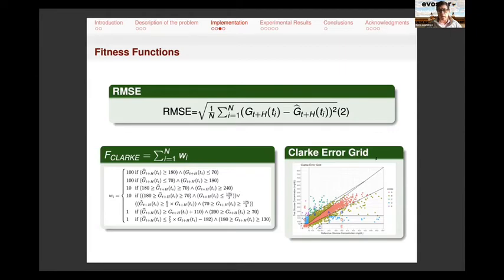In particular, we use the Clarke error grid, which is a grid usually used in the field of diabetes for assessing the errors or the severity of the misprediction. We divide this grid in five zones and the predictions in zones A and B we will try or we will try to avoid prediction in zones C, D, and E because they are more dangerous for the patient.